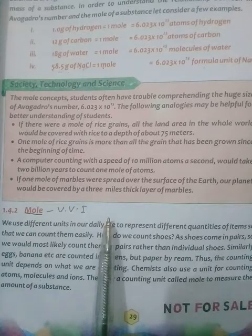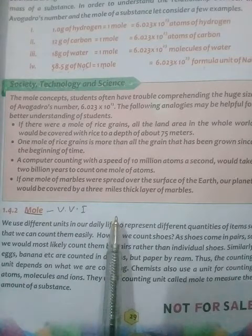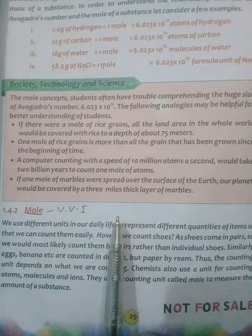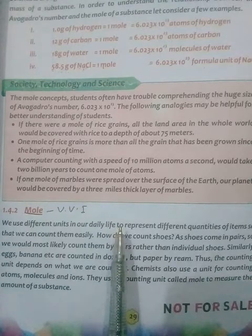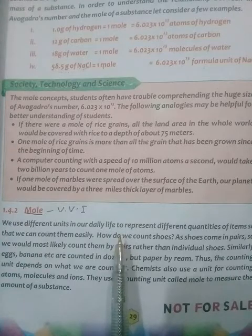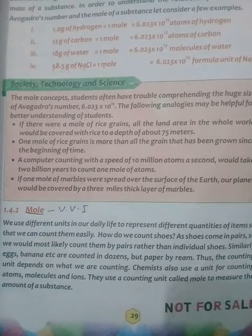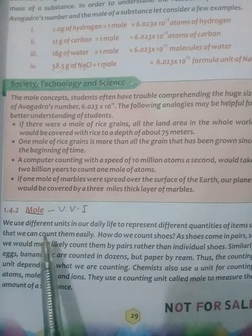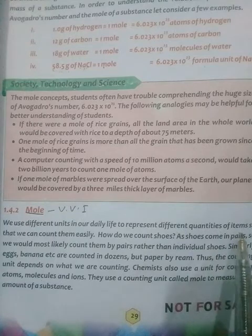A mole is defined as the amount of a substance which contains Avogadro's number of particles. Avogadro's number is the number of particles which is equal to 6.023 × 10²³. We use different units in our daily life to represent different quantities of items so that we can count them easily.